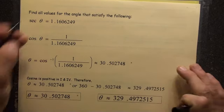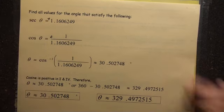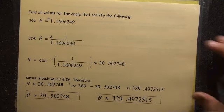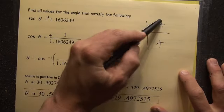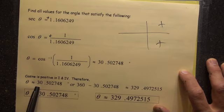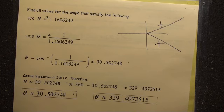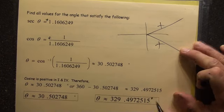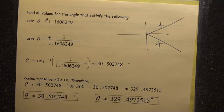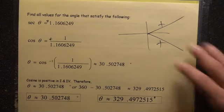Then, the question is, where is cosine positive? Cosine will be positive with positive x value, quadrant one, quadrant four. Therefore, we're either talking about 30 degrees or negative 30 degrees, which puts you down at 329.4972515 degrees. So there's the two possible values for theta.